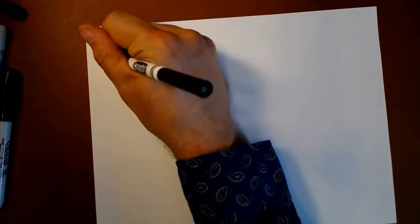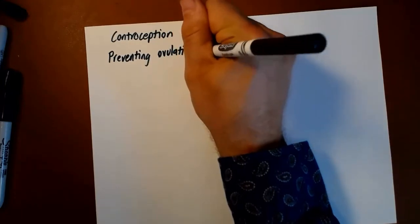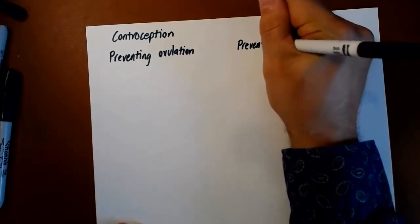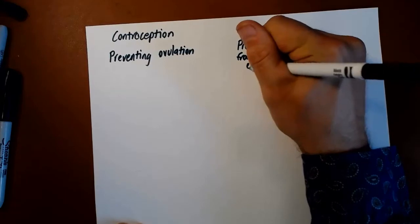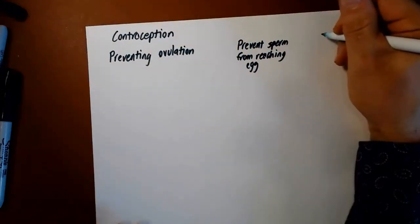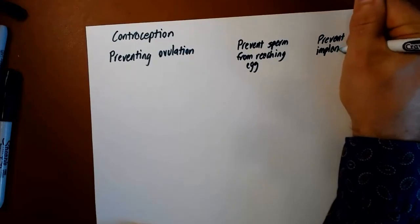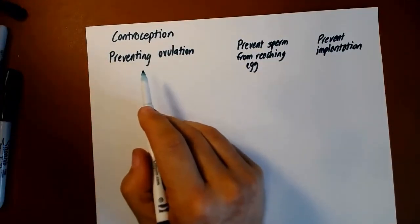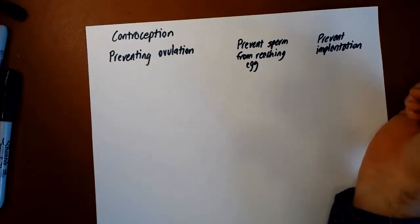When we think about contraception right now, we think about it falling into several categories. There are ways of preventing ovulation. There are ways of preventing the sperm from reaching the egg. And it is theoretically possible that you might prevent implantation of a fertilized egg. The vast majority of our methods focus on these two. Let's talk about those. Let's start with preventing sperm from reaching the egg. The simplest method of contraception is abstinence, not having sex.